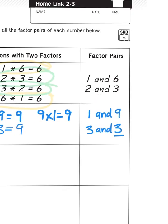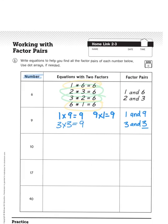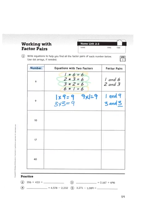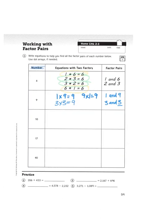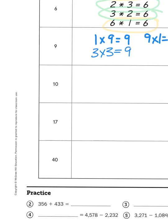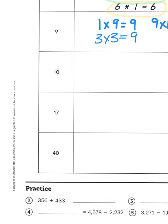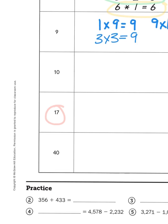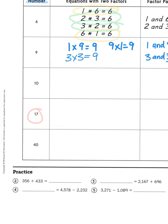Now there are some numbers that only come with one pair of factors. Those are numbers that are considered to be prime. And we'll get into prime numbers a little later in this unit. I will point out that the number 17 is an example of a prime number. That means that there are no other multiplication combinations that can get us to 17, except multiplying it by one.